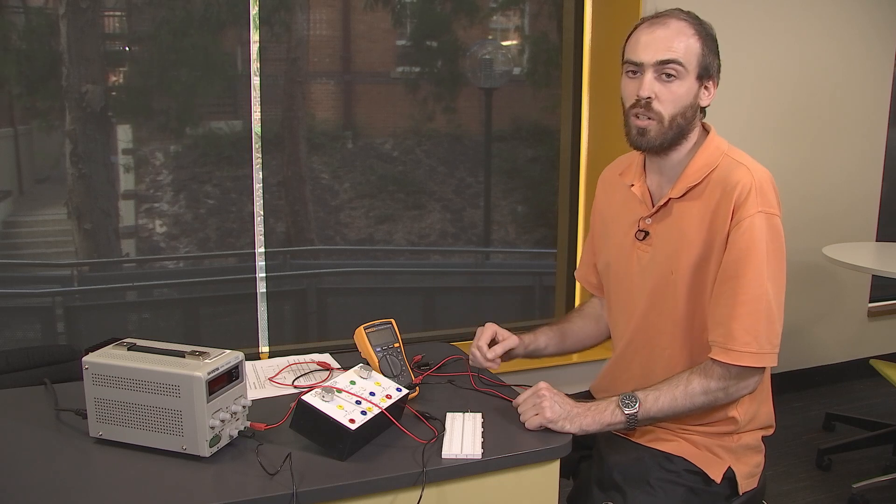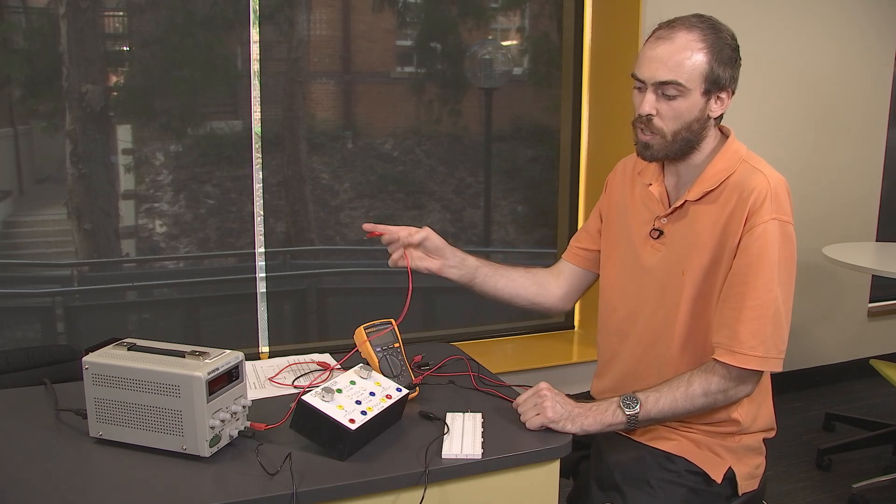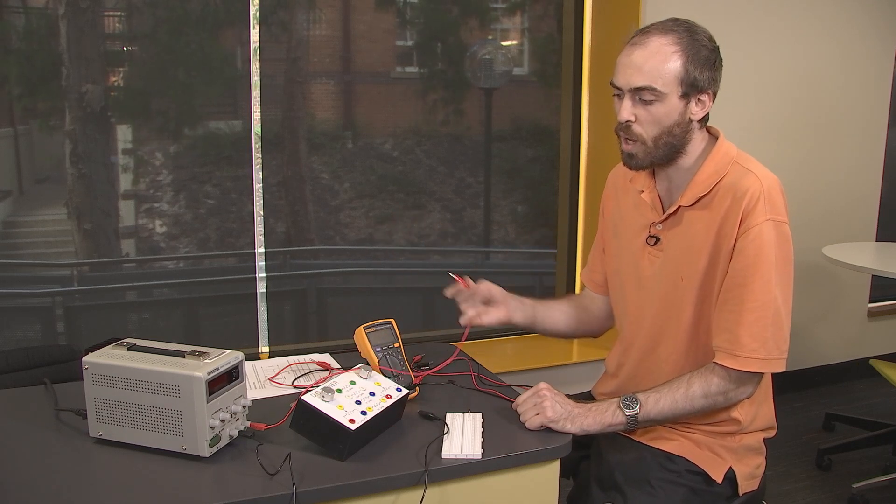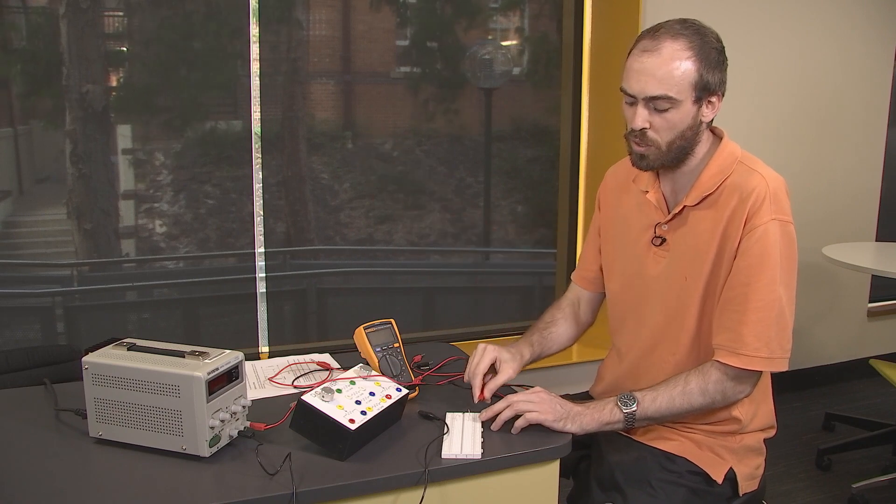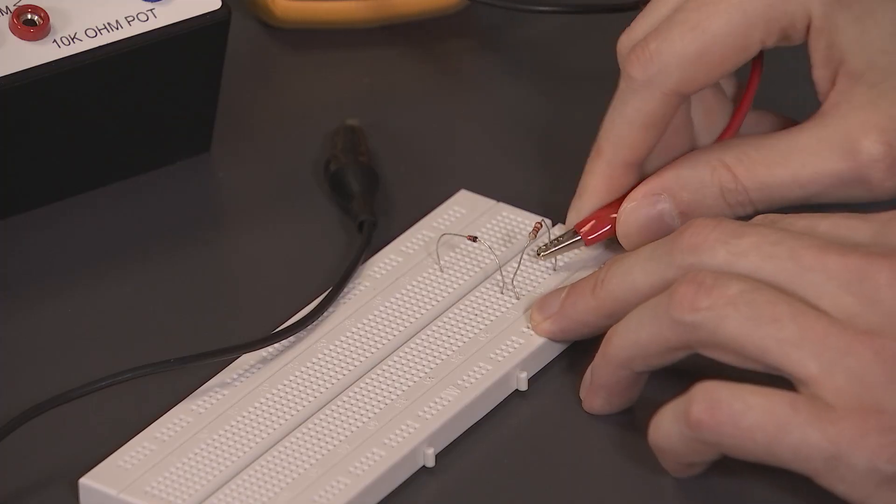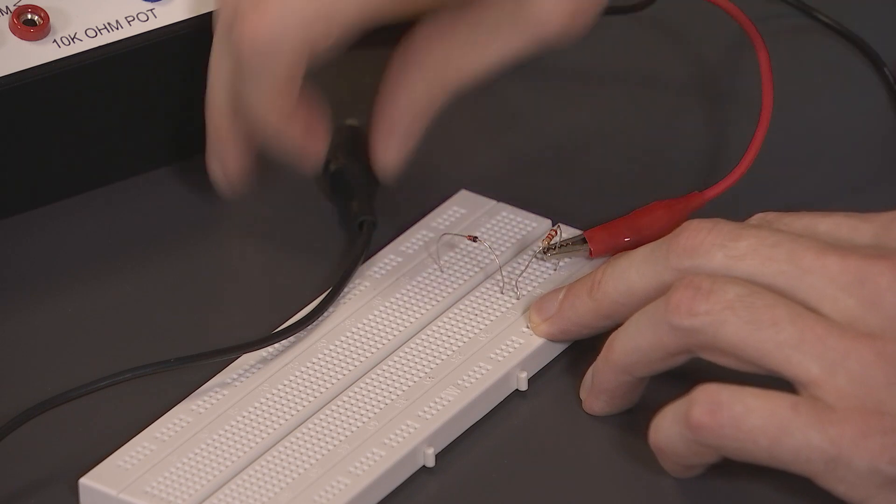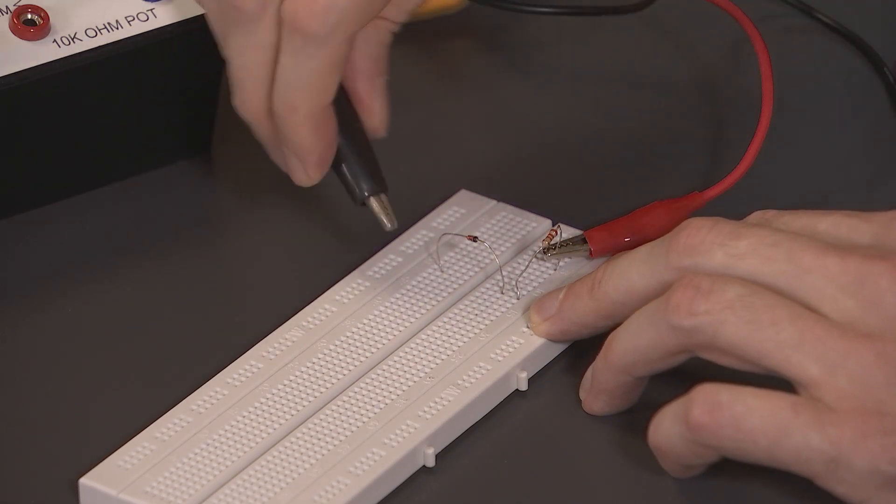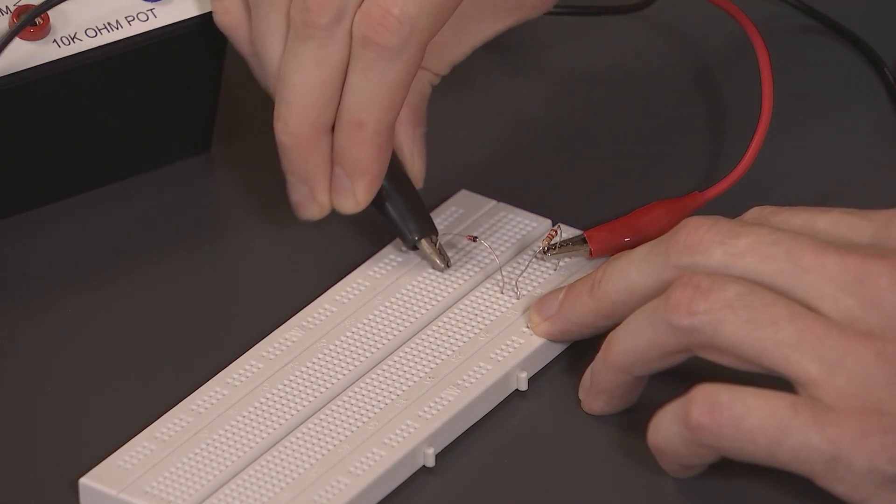First thing I need to do is to connect the power supply to the circuit. So I'm going to connect from the positive terminal to this end of the resistor, and I'm going to connect from the negative terminal to the anode of the Zener diode.